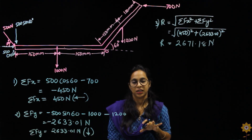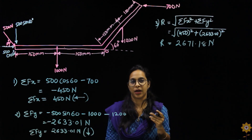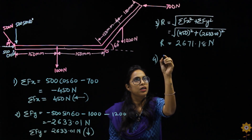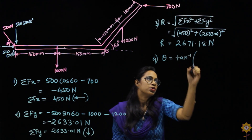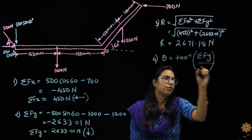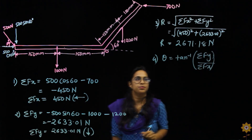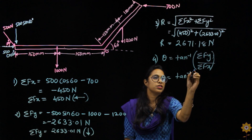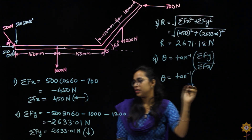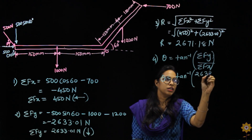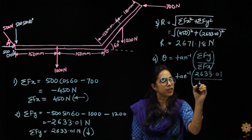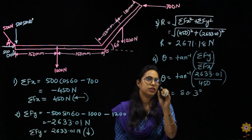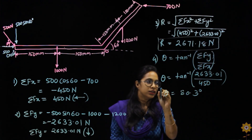Since this is a general force system, the resultant can act at some angle, so we need to find that angle. Theta equals tan inverse of (summation of Fy divided by summation of Fx), which is tan inverse of 2633.01 divided by 450. This gives theta equal to 80.3 degrees.